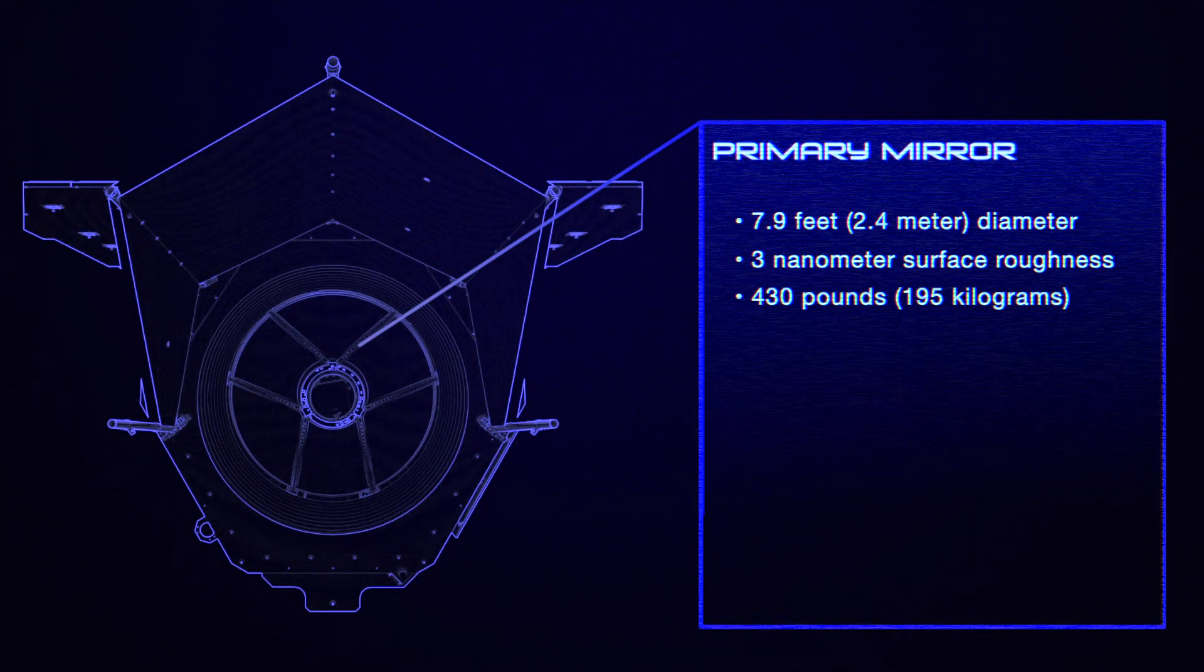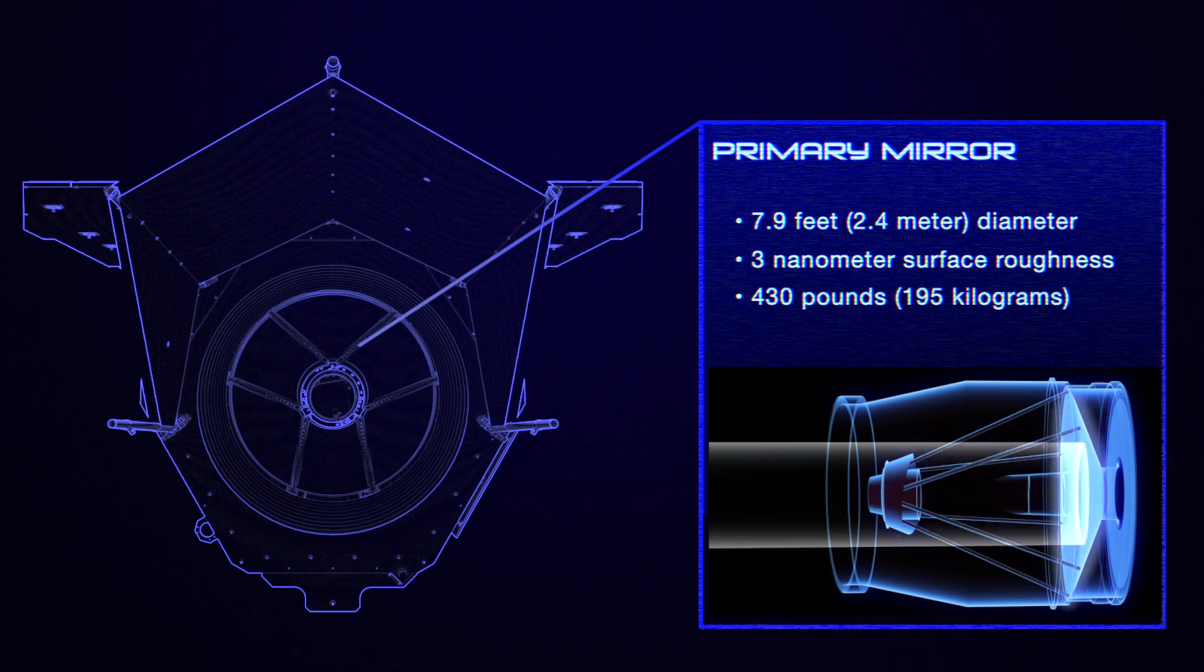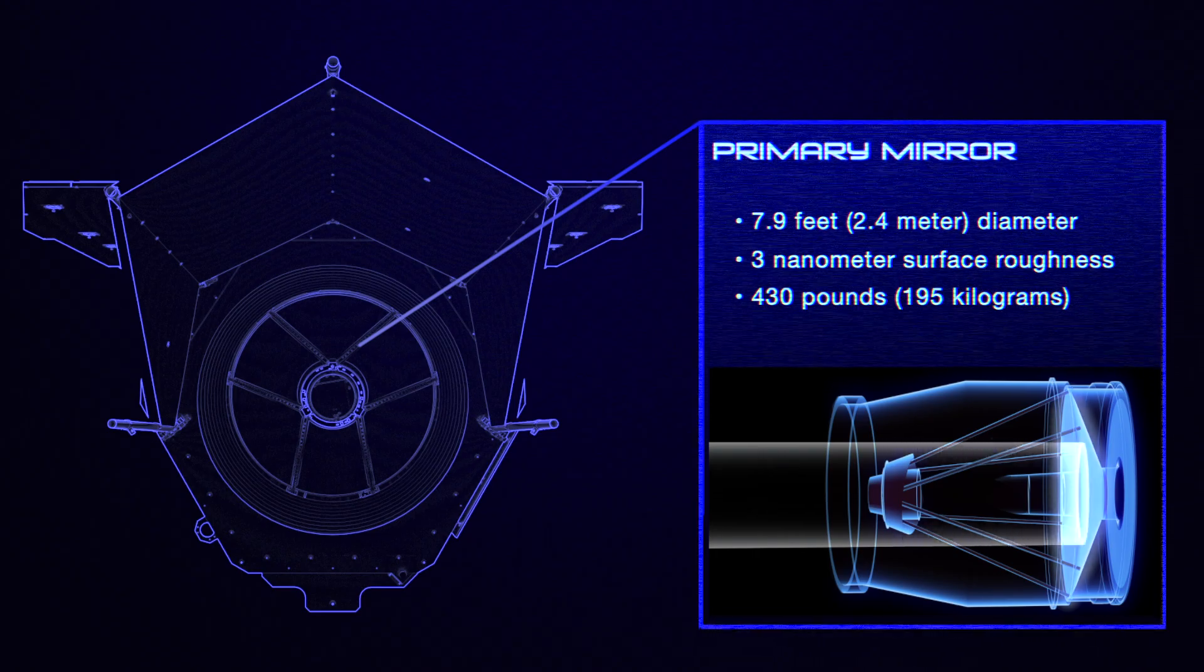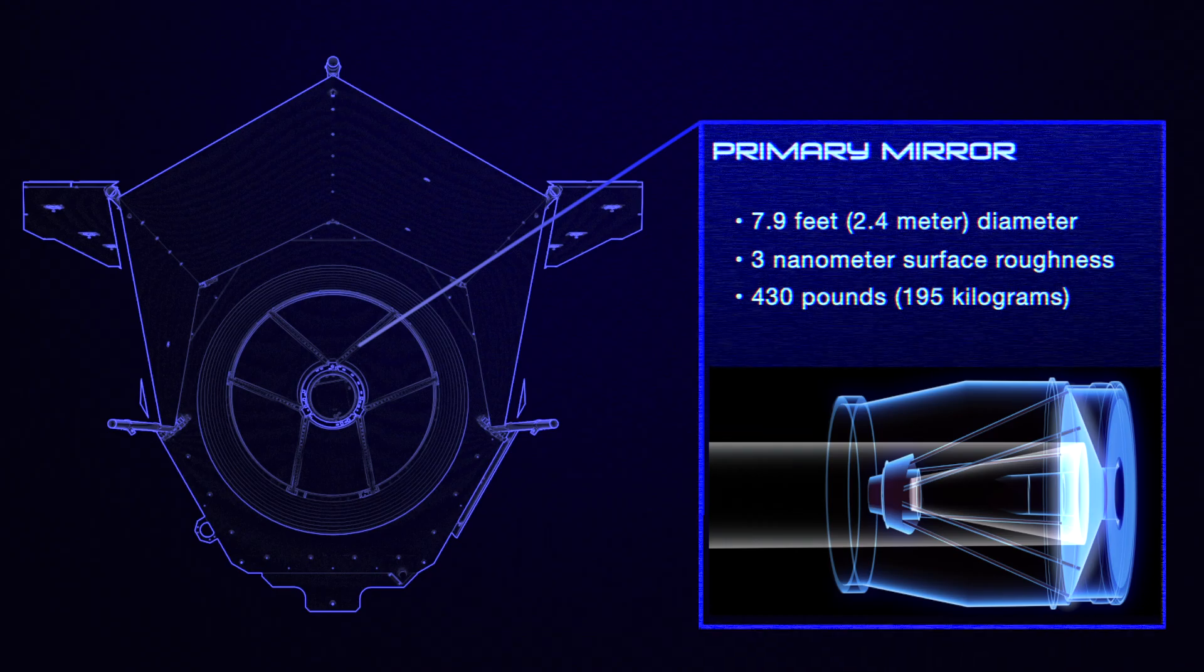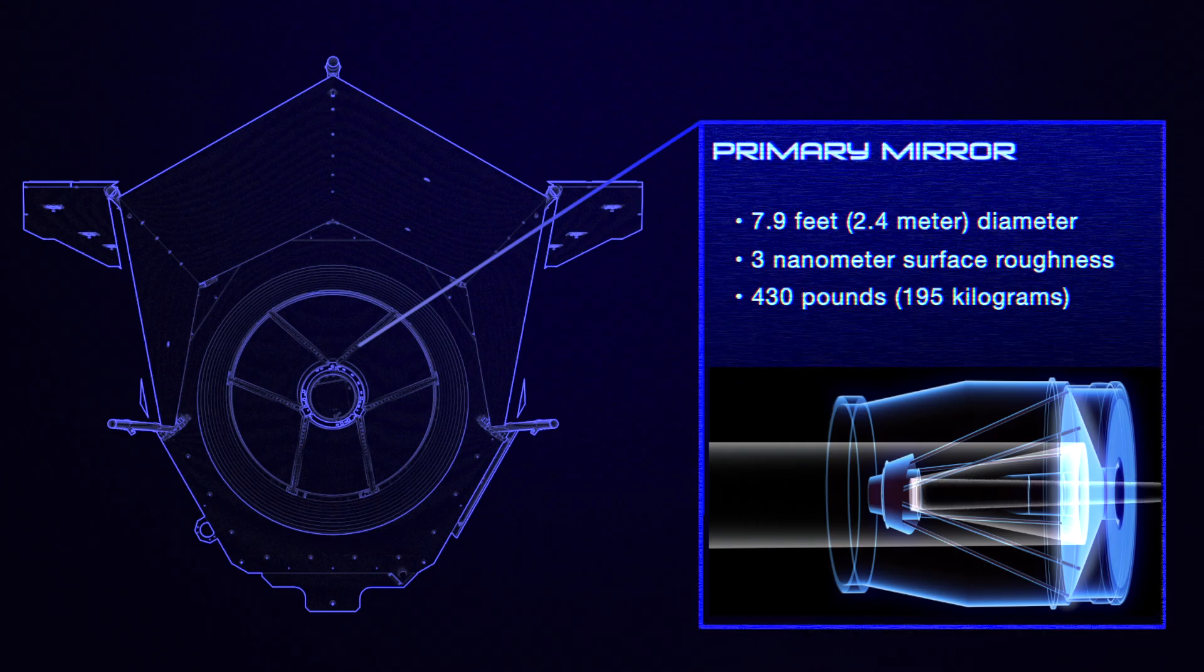This is where WFIRST is closest to Hubble. It has the same size and type of main mirror, a 2.4-meter precisely shaped piece of silver-coated glass. The size of this mirror is partly how WFIRST matches Hubble's resolution.